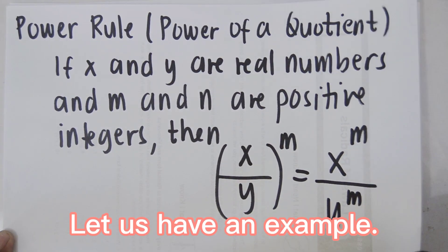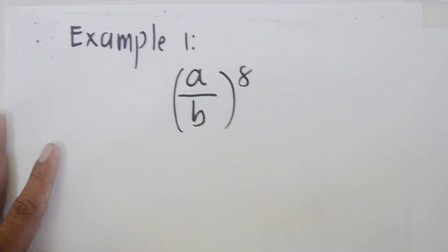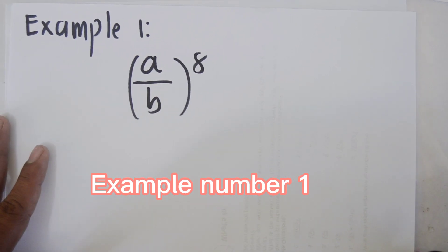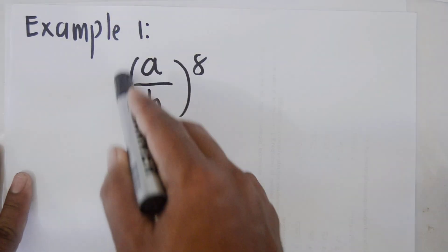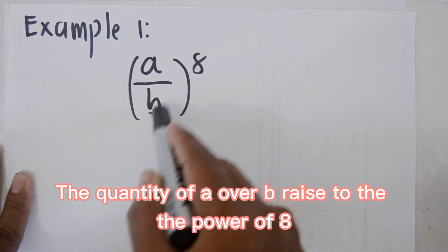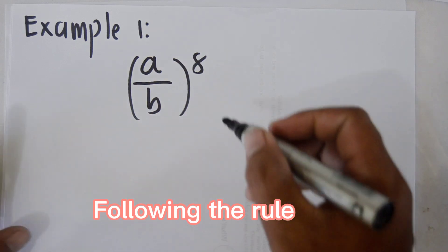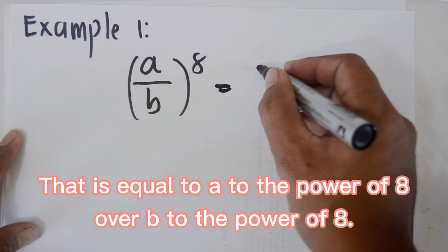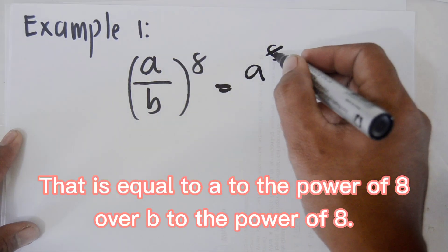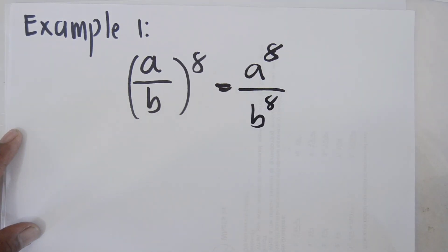Let us have an example. Example number one: the quantity of a over b raised to the power of 8. Following the rule, that is equal to a to the power of 8 over b to the power of 8.